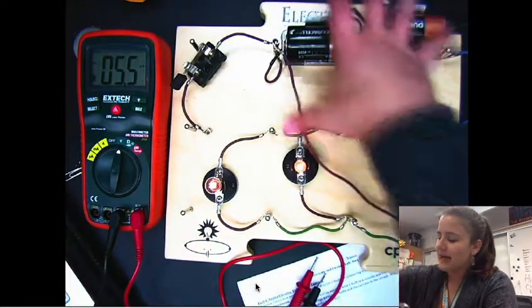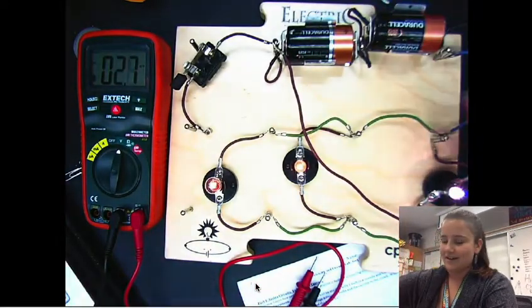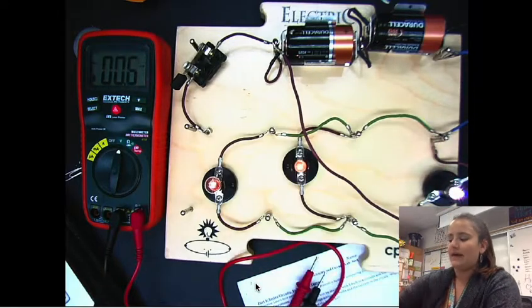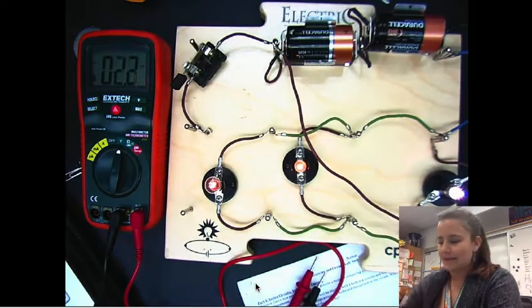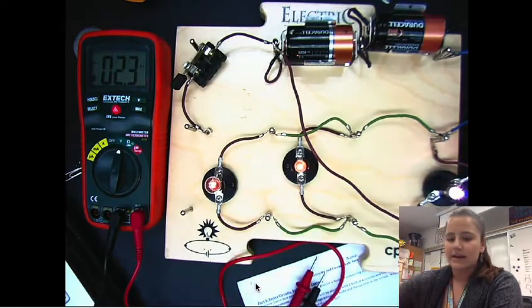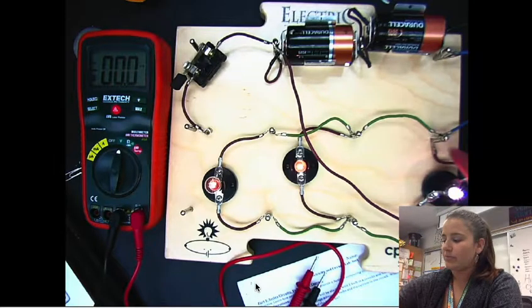But there we go. I cheated a little bit. So you have the batteries here and then each of the light bulbs in parallel. But the main key, the main thing that I want you guys to see, is that there's this branching.